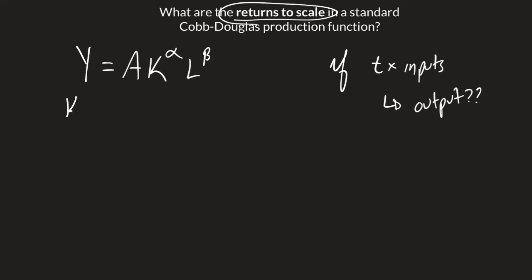So our inputs here are K and L. Let's go ahead and multiply that K and L by t. So we have our right side is A times K times t raised to the alpha, and L times t raised to the beta.